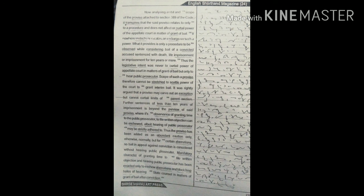Mandatory character of granting time to file written objection and hearing public prosecutor has been enacted only to skew aberration and block loopholes of hearing state council in matter of grant of bail after conviction.